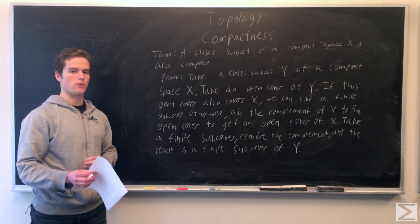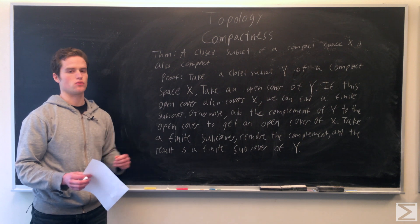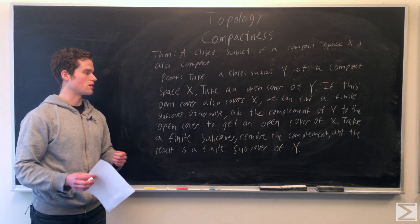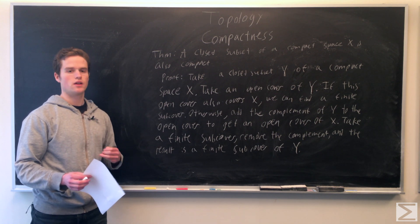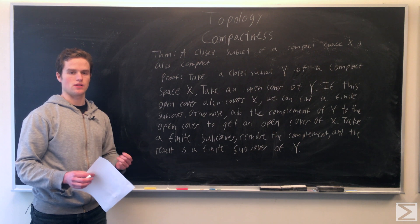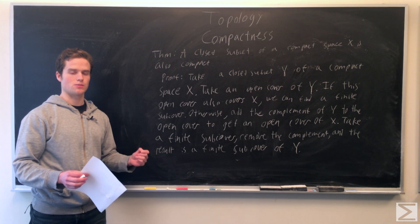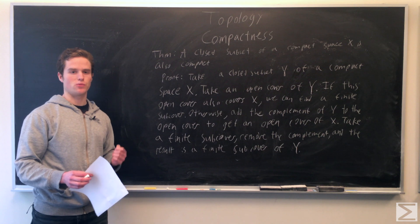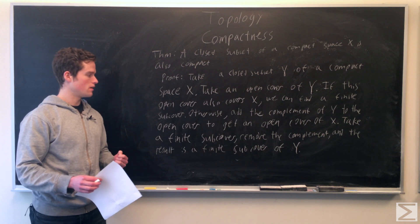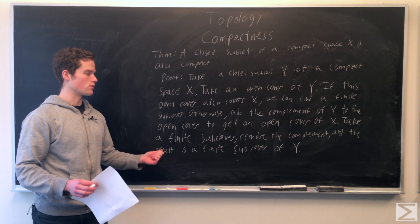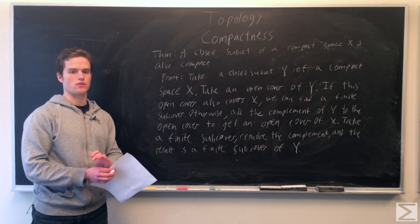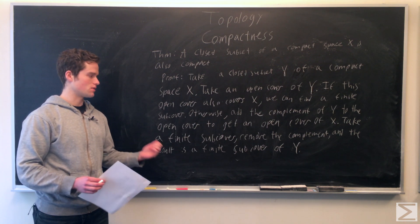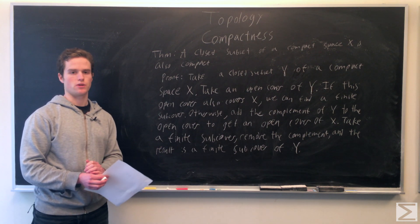Once we remove the complement of Y, we still have a finite sub-cover that covers all of Y, because the complement of Y has no points in Y. So we are left with a finite sub-cover of Y. In either case, Y has a finite sub-cover, and so it must be compact.